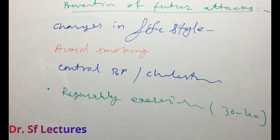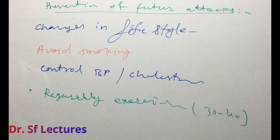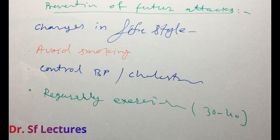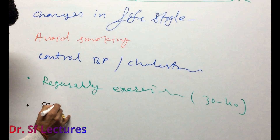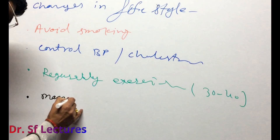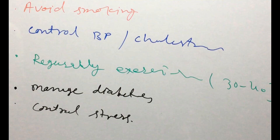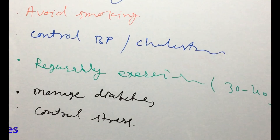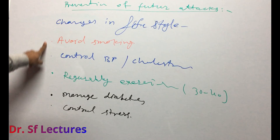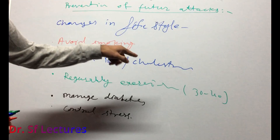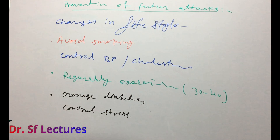We should maintain a healthy diet and healthy weight, manage diabetes, and control stress. This prevention is not only for patients of myocardial infarction but for all of us: avoid smoking, control blood pressure and cholesterol, exercise regularly, manage diabetes, and control stress.